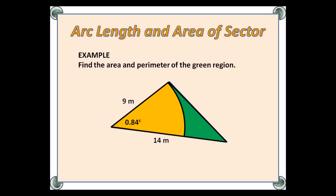Just one example today: find the area and perimeter of the green region. You'll notice we have a triangle which has a sector inside it, with a radius of 9. The angle is 0.84 radians, and one of the sides of the triangle is 14 metres.